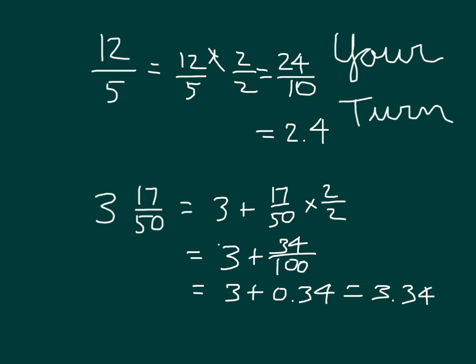So the big key is to be able to get either tenths, hundredths, or thousandths within those denominators. And what you're doing is you're multiplying by that fraction that is equivalent to one to be able to get these decimal equivalents. So we're relating these fractions with decimals.